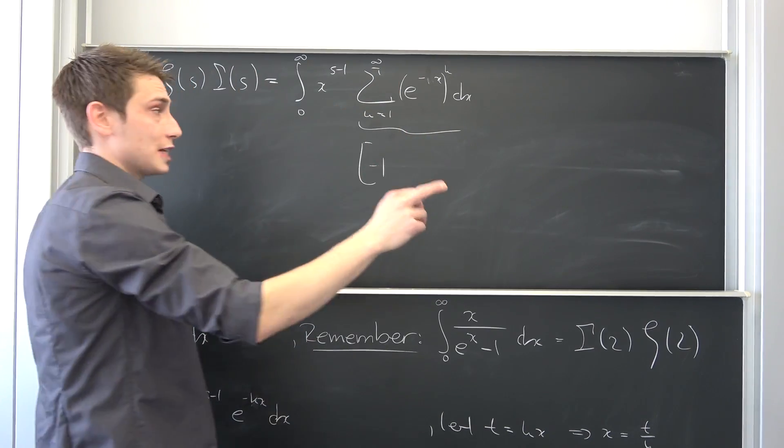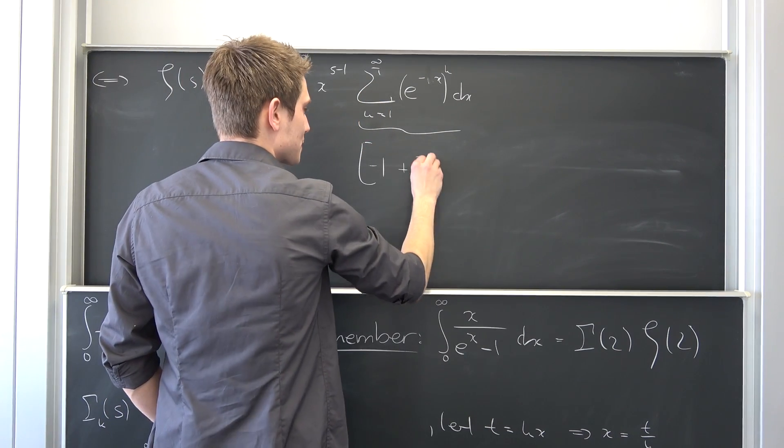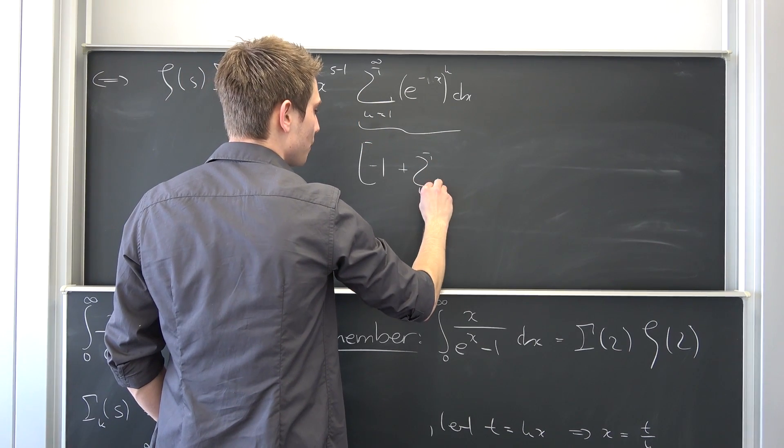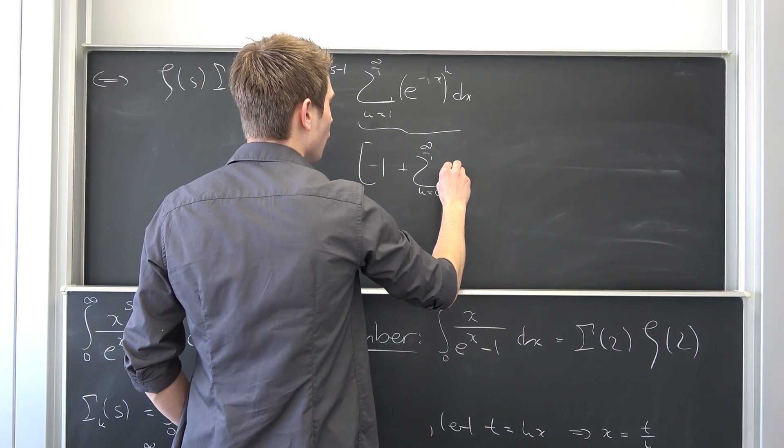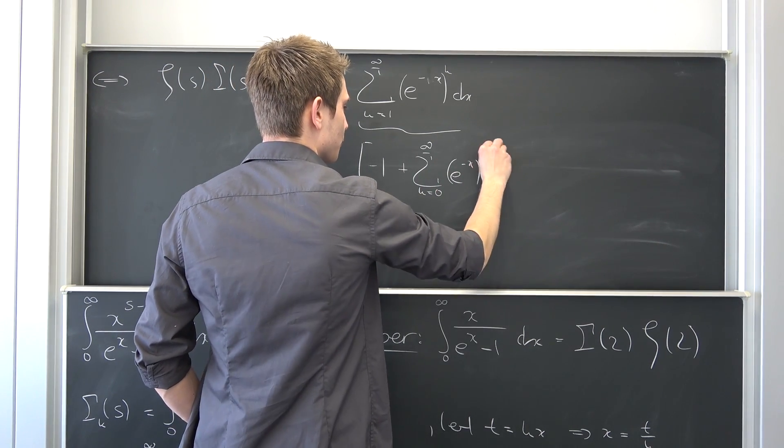So negative 1 plus 1 plus this sum is nothing but, well, plus the sum running from k being equal to 0 to infinity of, well, e to the negative x to the k power.